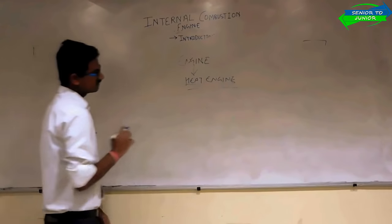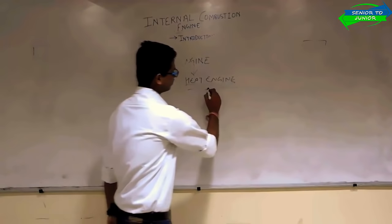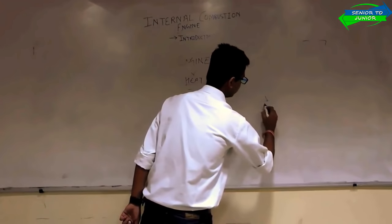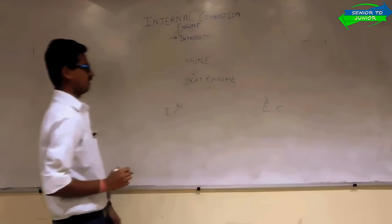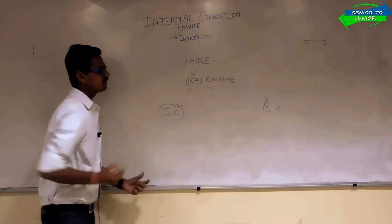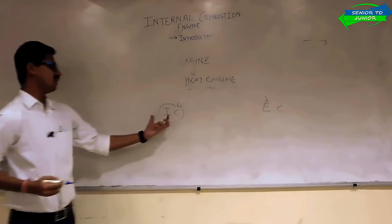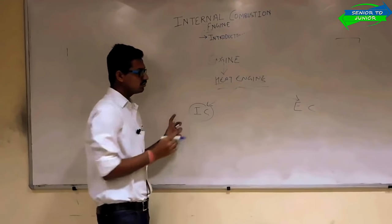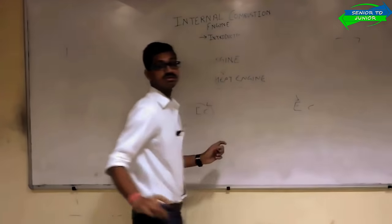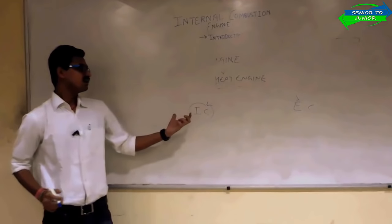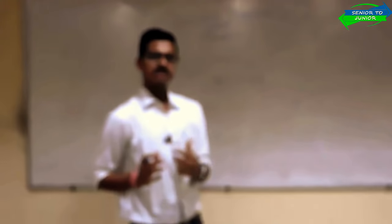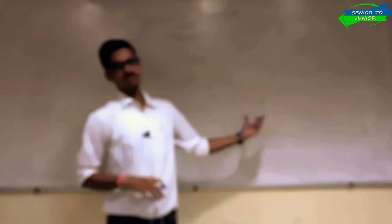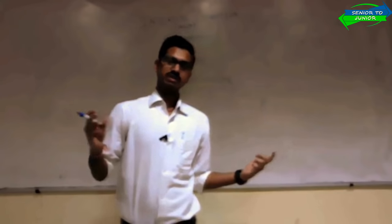Heat engine is divided into two categories: the internal combustion engine and the external combustion engine. We are going to study the internal combustion engine; the external combustion engine we are not going to study in detail. But you should know the difference between them. Internal combustion engine is an engine in which combustion takes place inside the cylinder, whereas in external combustion engine the combustion takes place outside the cylinder.